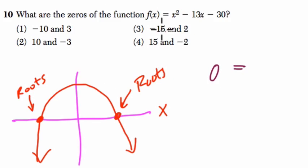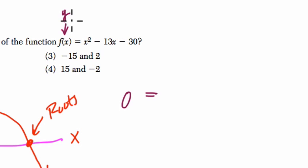So the height is zero, and height refers to f of x. That's like our y variable. The height is zero. Let's solve for x: x squared minus 13x minus 30.